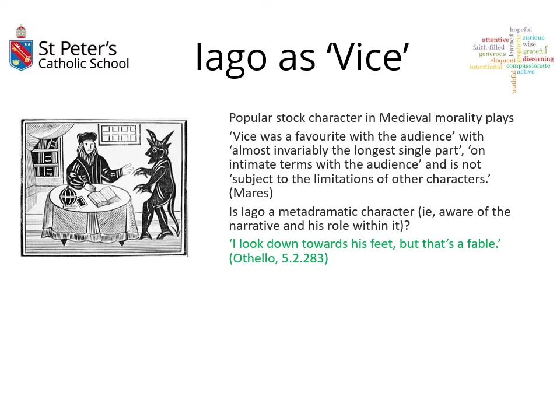Iago can also be read as a vice character. Vice was a popular stock character in medieval morality plays — simple plays traveled around the country to teach moralistic and theological lessons. Vice was the bad guy, almost invariably the longest single part, on intimate terms with the audience, and not subject to the limitations of other characters. Iago is very similar to that — absolutely the flashiest character in the play, and the one who for a long time is the most interesting.